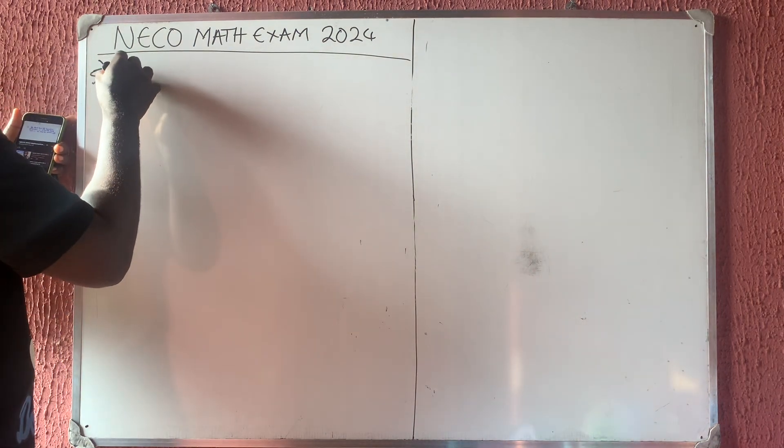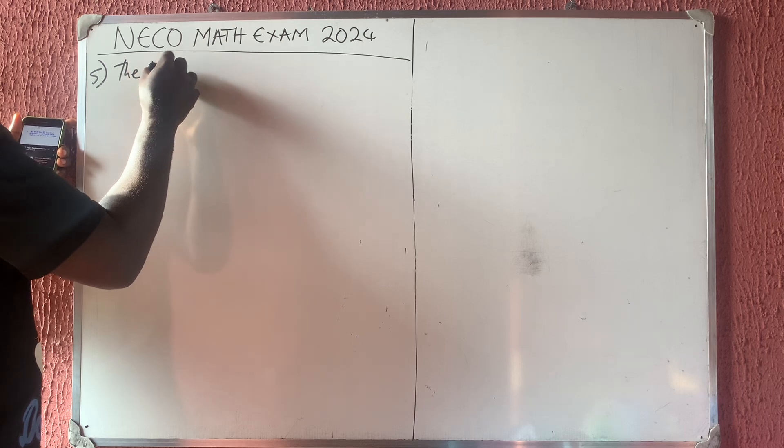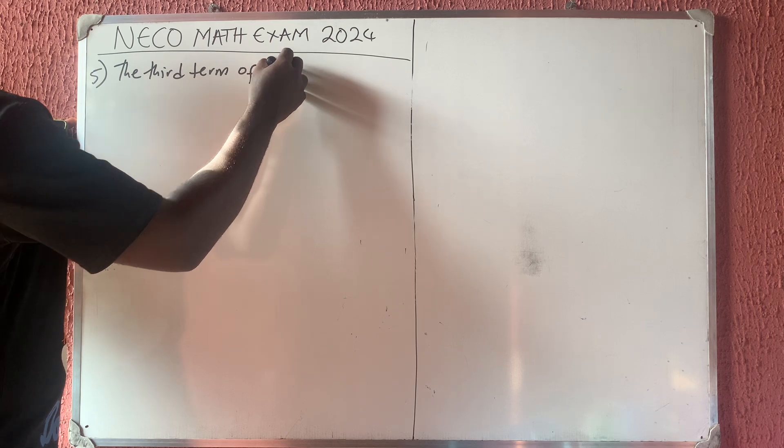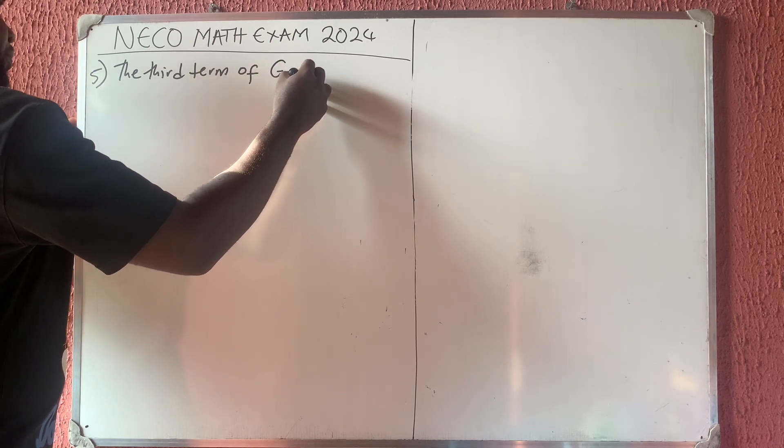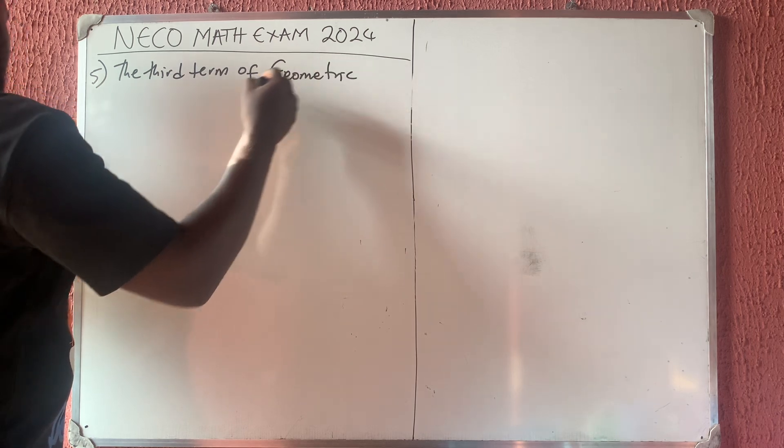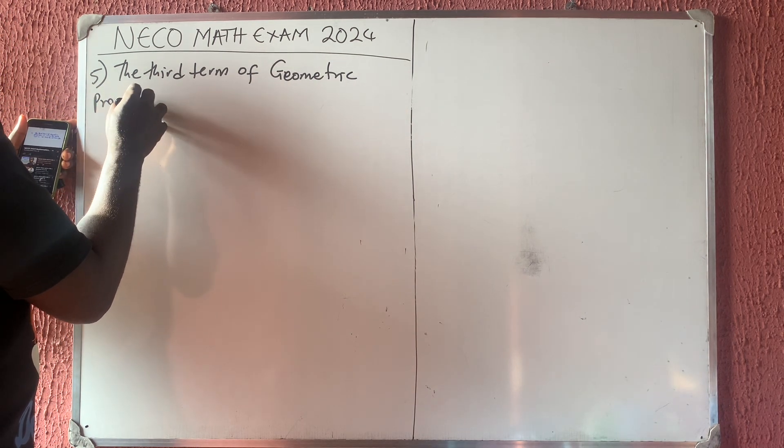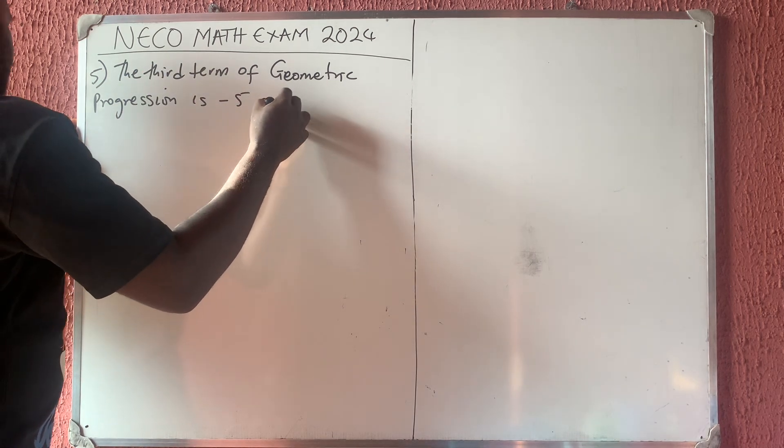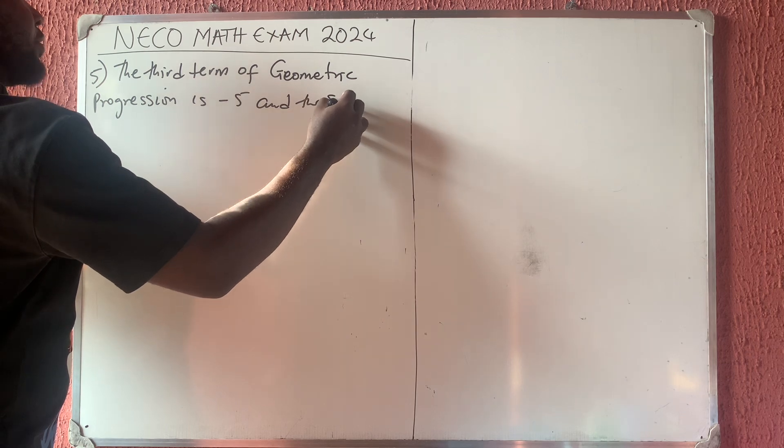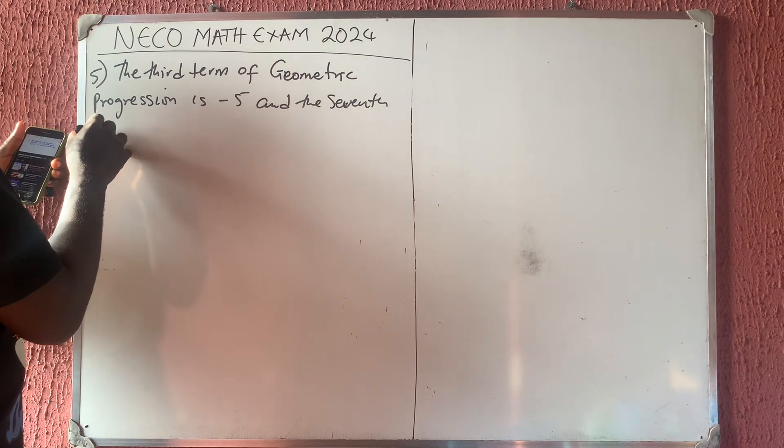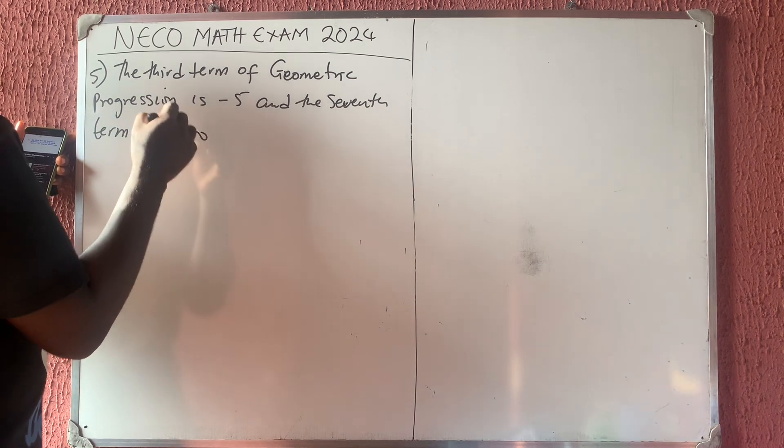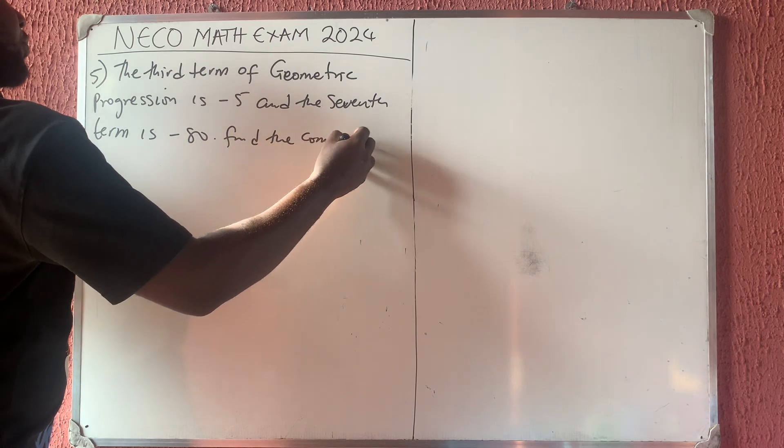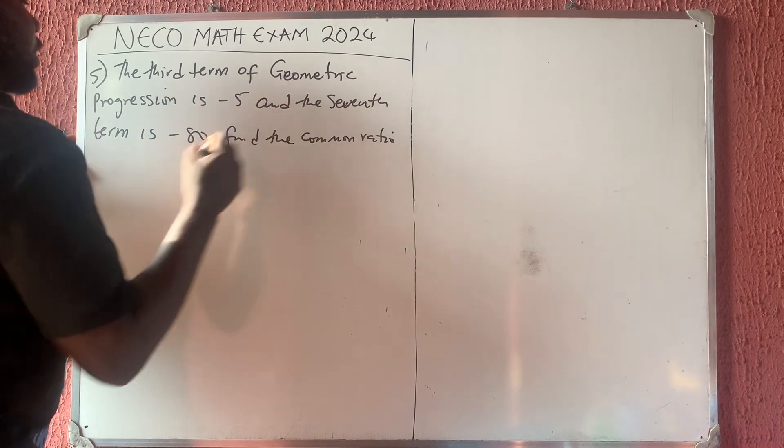Question number 5 says: The third term of a geometric progression is minus 5 and the seventh term is minus 80. Then it says find the common ratio. Solution.